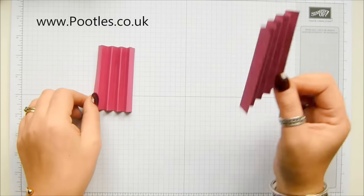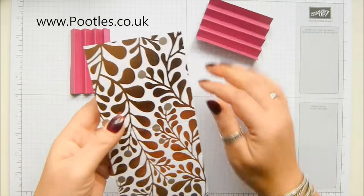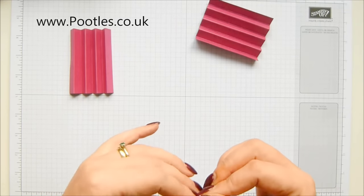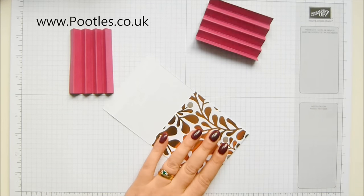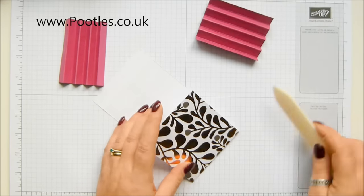Those are the concertina sides done. This one you do want to give a bit of a burnish to, so just run it gently over with your bone folder.